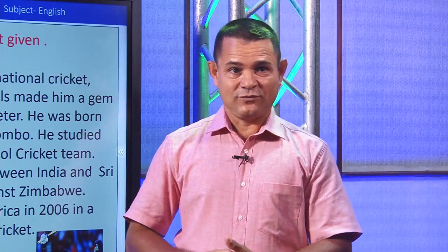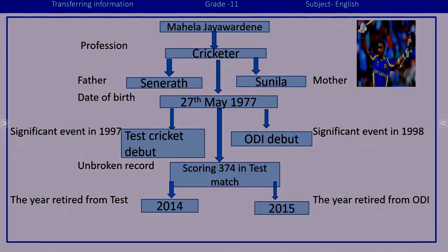Mahela Jayawardena made his test cricket debut in 1997 between India and Sri Lanka, and his one-day international debut in 1998 against Zimbabwe. He holds the record of scoring 374 against South Africa in 2006 in a test match, which is the highest score by a Sri Lankan in test cricket. He retired from tests in August 2014 and from ODIs in 2015. Those are the things we need to fill those gaps.